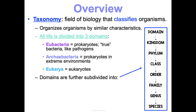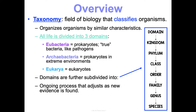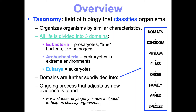Domains get further subdivided into kingdoms, phyla, classes, orders, families, genuses, and species. This is an ongoing process — taxonomy is constantly being adjusted as new evidence and information is found. Now phylogeny is included in helping us classify organisms, which we'll get to in a little bit. So this is a constantly changing field.